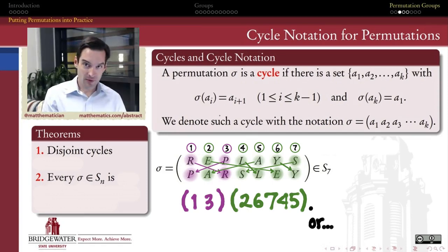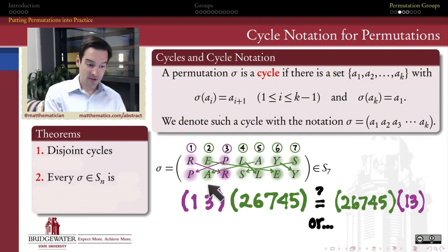But then you might ask, if you're thinking abstract algebraically, does it matter if I write the 1, 3 before the 2, 6, 7, 4, 5? Or can I trade places? If I sort of flip flop my green letters around first, and then I worry about flip flopping my purple ones afterwards, do I get the same permutation at the end of the day?